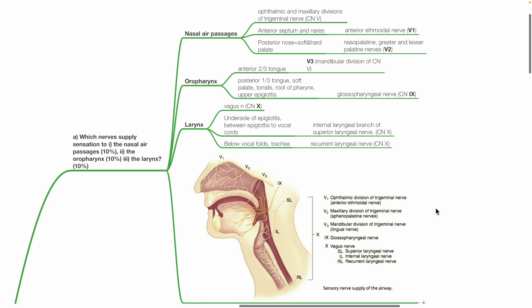Anterior two-thirds of the tongue is supplied by V3, mandibular division of cranial nerve 5. Posterior one-third of the tongue, soft palate, tonsils, root of pharynx and upper epiglottis are supplied by the glossopharyngeal nerve, cranial nerve 9.